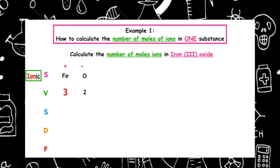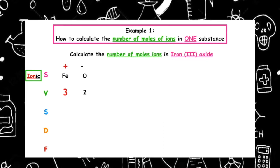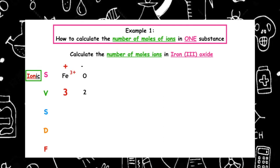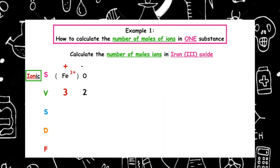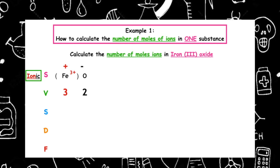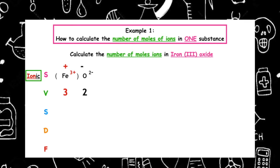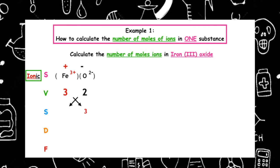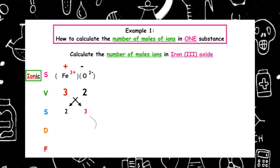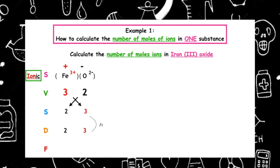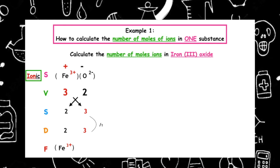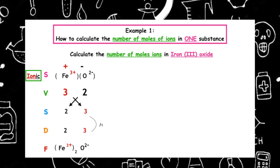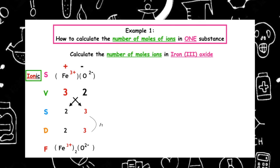We make a sandwich and wrap it up: iron becomes Fe³⁺ in brackets, and oxygen becomes O²⁻ in brackets. We swap over the valences. The highest number both can be divided by, to keep it a whole number, is 1. That means the ionic formula is (Fe³⁺)₂(O²⁻)₃.